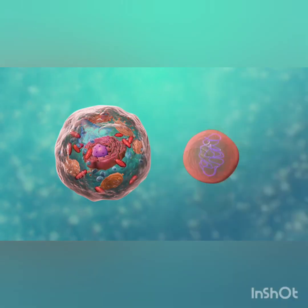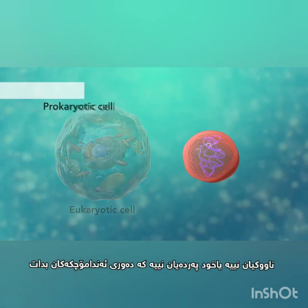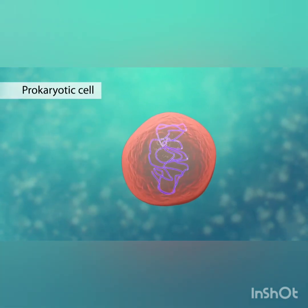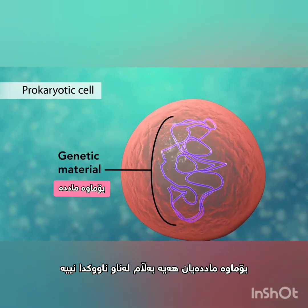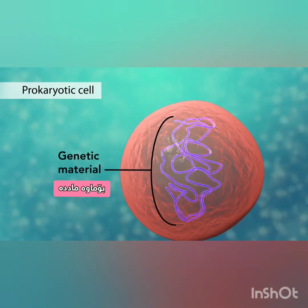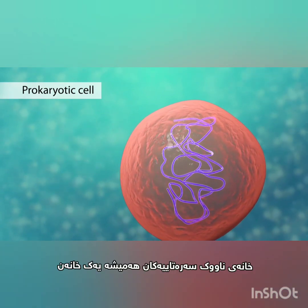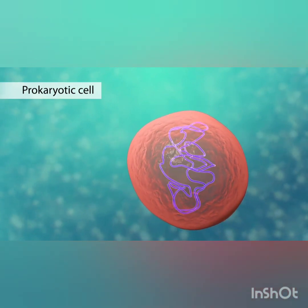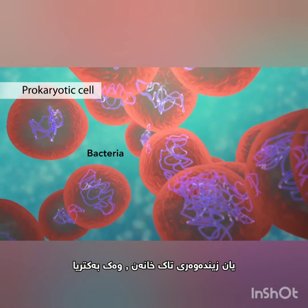The second category is prokaryotic cells. They don't have a nucleus or membrane-enclosed organelles. They do have genetic material, but it's not contained within a nucleus. Prokaryotic cells are always one-celled or unicellular organisms, such as bacteria.